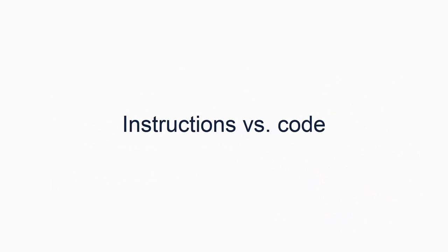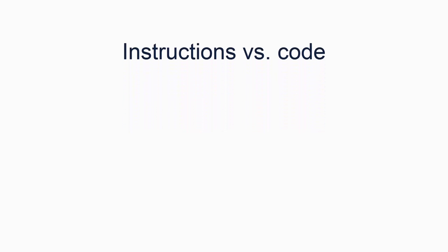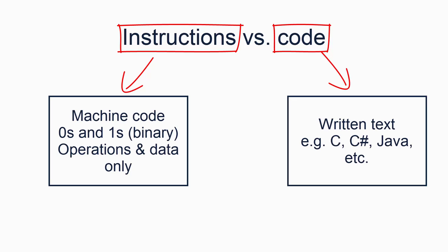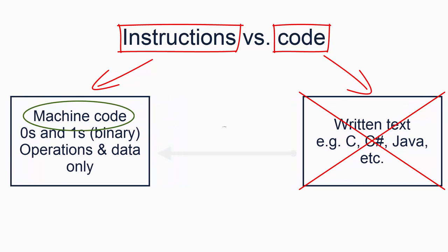I like to point out that I've been saying instructions rather than code thus far, to make an important distinction. When we think of code, we usually think of the text we write, be that C, C-sharp, or any other language. When we think of instructions, we should think of the machine code — the ones and zeros which the processor actually understands and executes. We must never forget that a processor does not understand code other than machine code. C, C-sharp, and others must be compiled to convert that text into machine code.